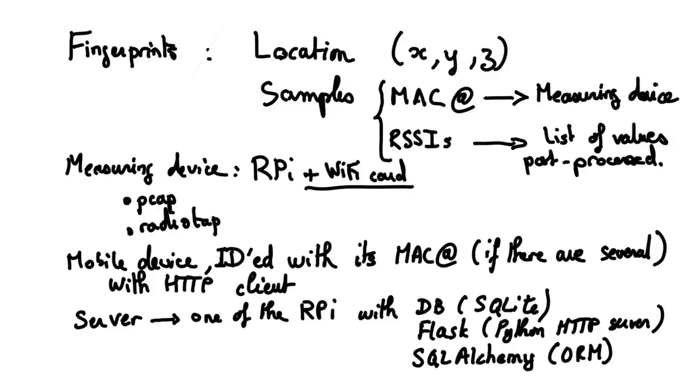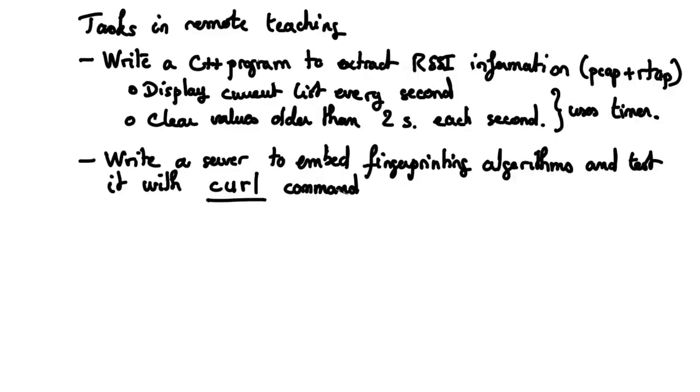Last but not least, our server will be one of the Raspberry Pis with a SQLite database, a Flask Python HTTP server, and the SQL Alchemy ORM to map the SQLite entities into objects. You will use one of your team's computers to run the server.